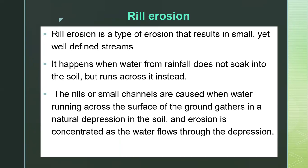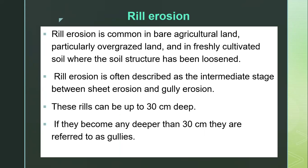Rill erosion is common in bare agricultural land, particularly over-grazed land where the land is very open with no vegetation covering it. Rill erosion is also likely to occur in freshly cultivated soil where the soil structure has been loosened — meaning the soil has been tilled and made very loose for cultivation.